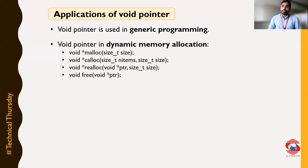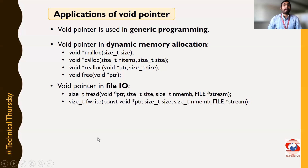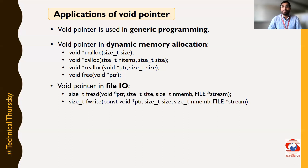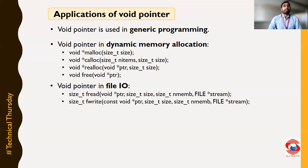Now let us talk about the second application. If you are going for file I/O and you are doing file I/O using fread and fwrite, again we use this void pointer. Because inside fread and fwrite, we don't care which type of data we are reading or writing — we just care about the size of the data and the count of the data. So we can pass the address or data using this void pointer to fread and fwrite.